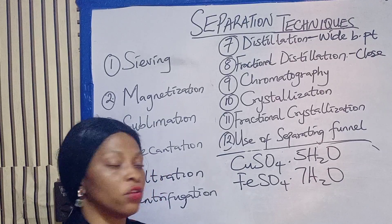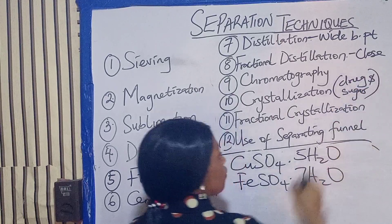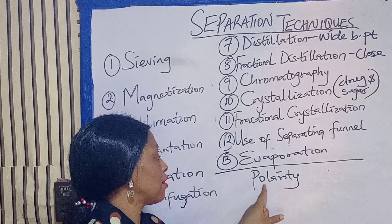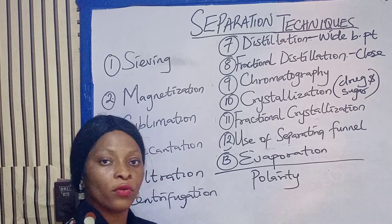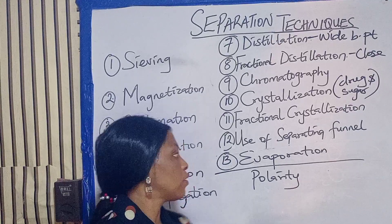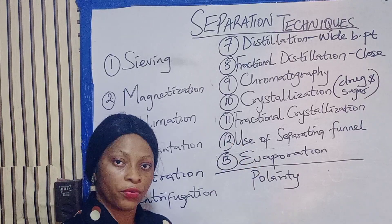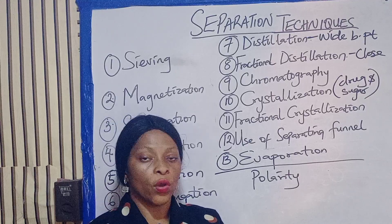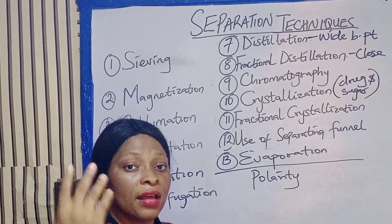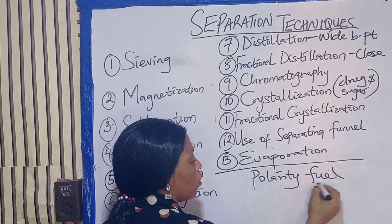Number twelve is the use of a separating funnel. A separating funnel is used to separate substances that have different densities — for example, a mixture of kerosene and water. You use the separating funnel, and at the end of the day you have your water separated and your kerosene separated. Note that water will be at the bottom because it is denser, and kerosene will be on top. Another example is a mixture of water and oil.